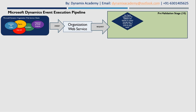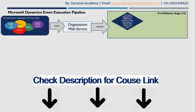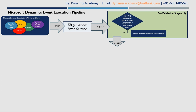In the pre-validation stage, the Dynamics 365 server first checks whether there are any plugins registered in pre-validation stage that match the context — that is, the message type and entity for which the event has been raised. If the server does not find any such plugins, it will update the organization web service request message and pass that updated request message to the next stage.